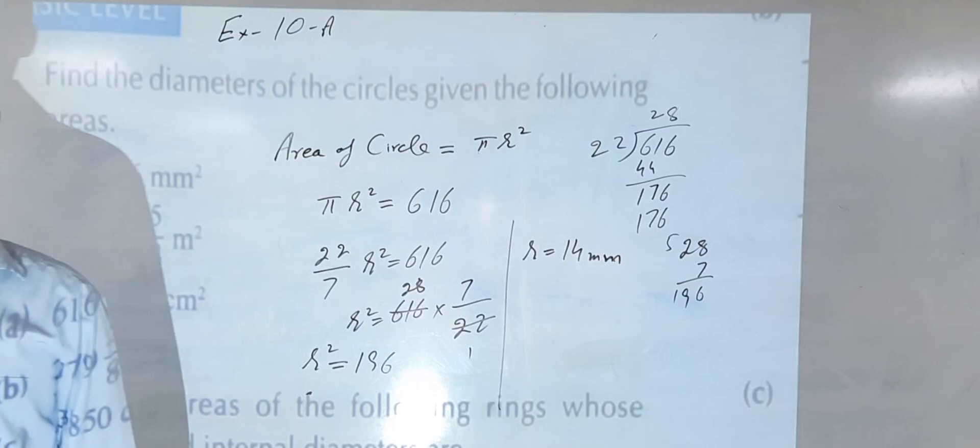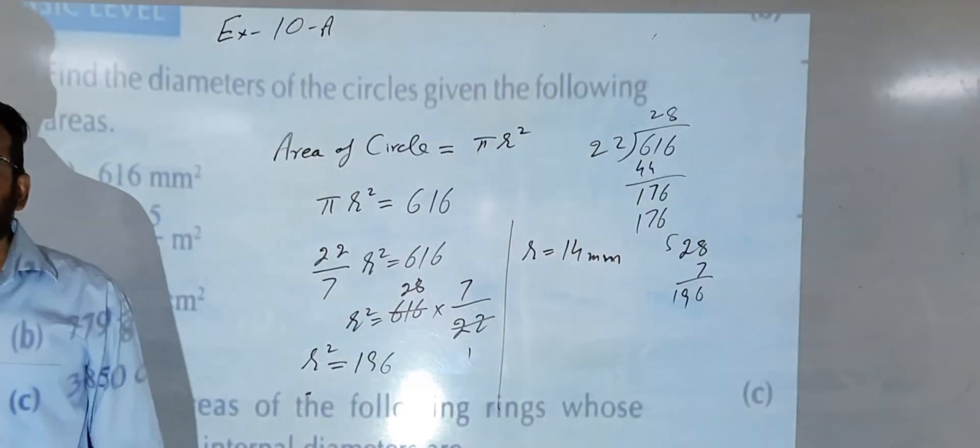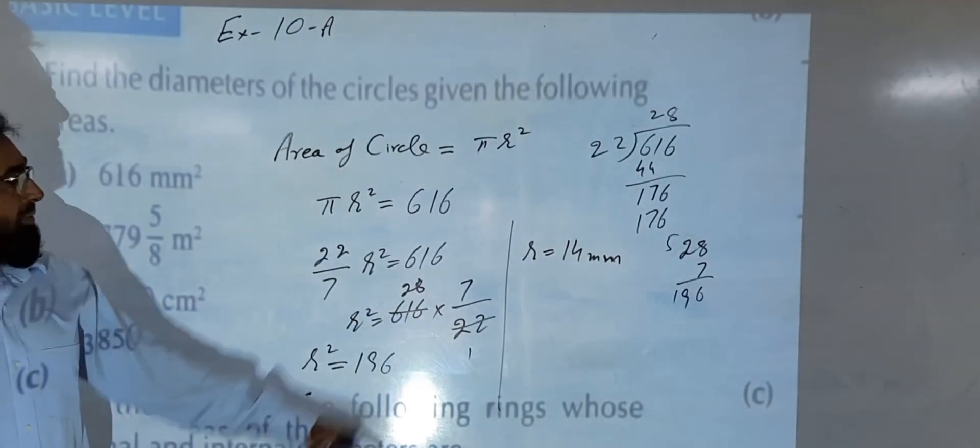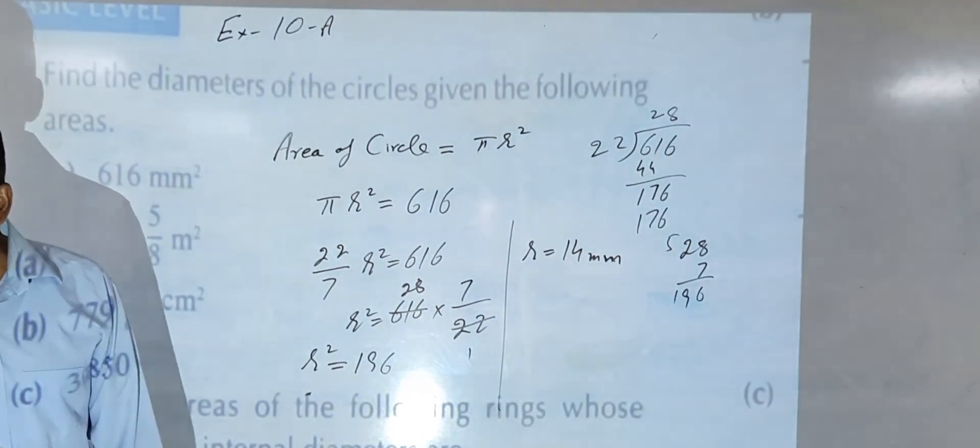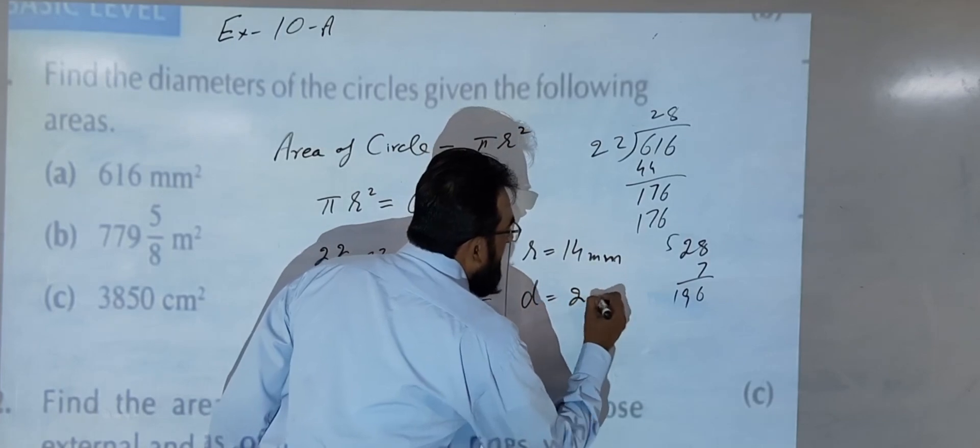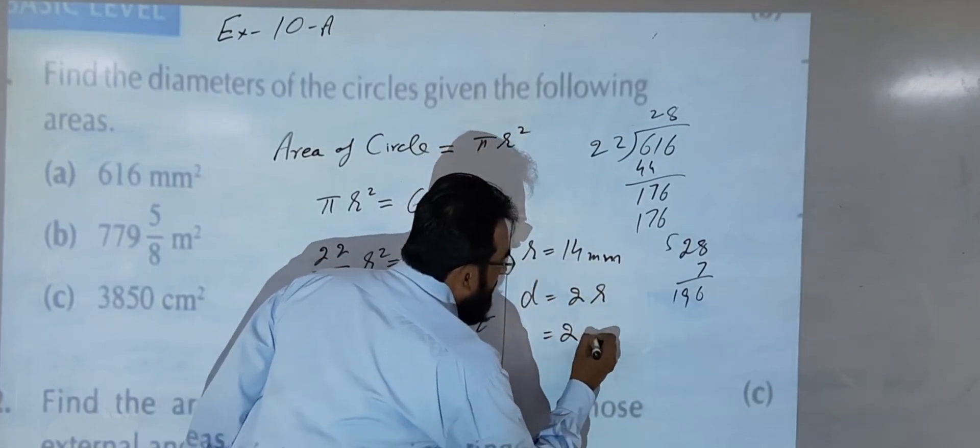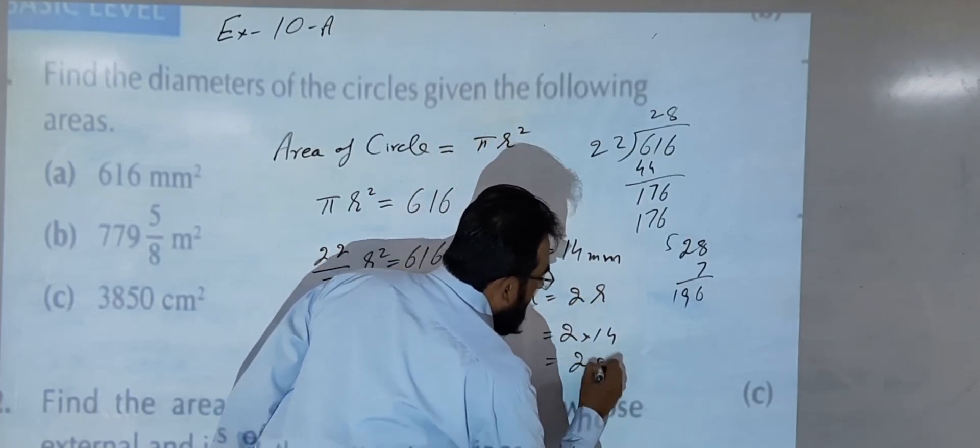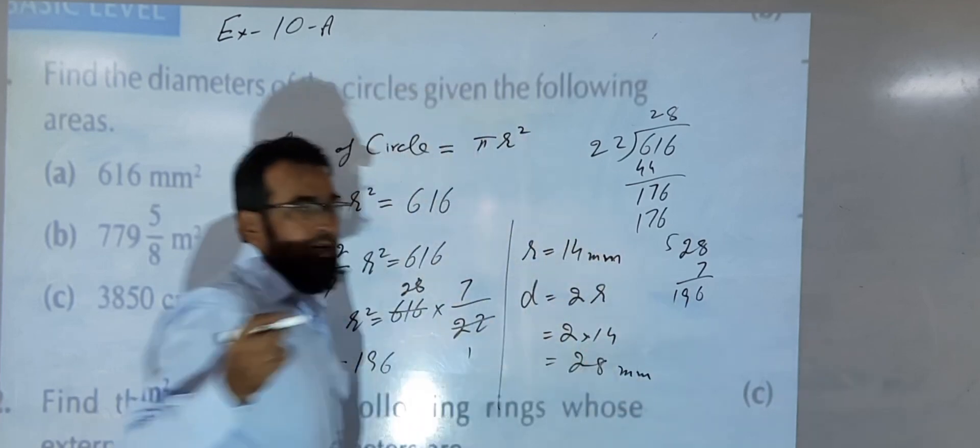You know that double of the radius is diameter. We have to find out the diameter of the circle. So diameter is equal to 2 times the radius, meaning 2 × 14 = 28 millimeter.